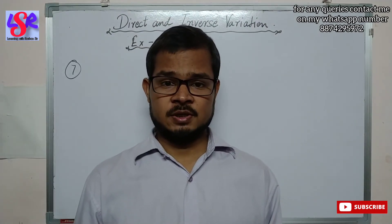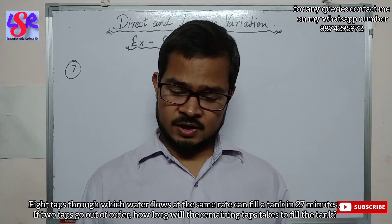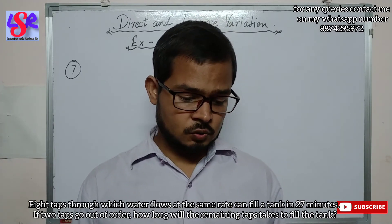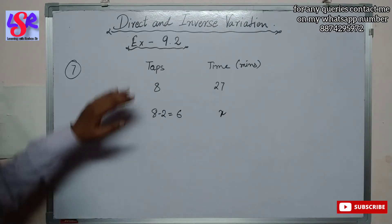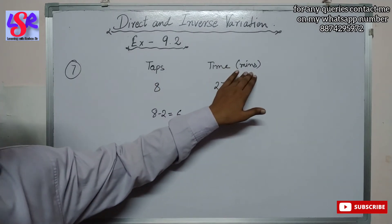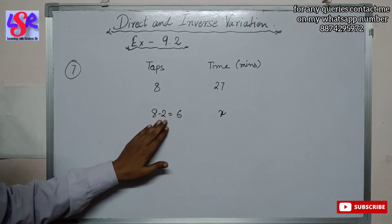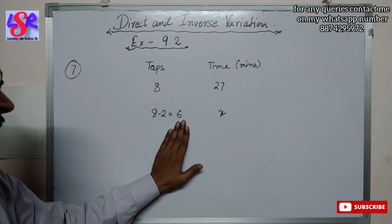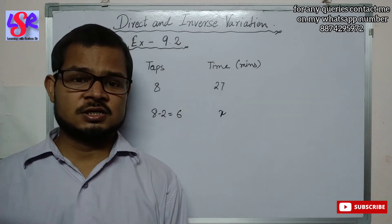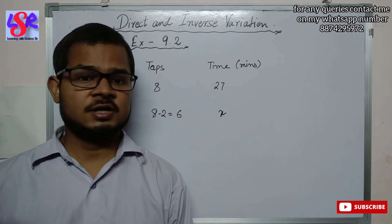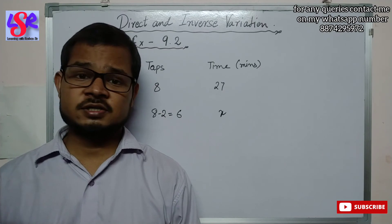Now let's see question number 7. Eight taps through which water flows at the same rate can fill a tank in 27 minutes. If 2 taps go out of order, how long will it take the remaining taps to fill the tank? With 8 taps it takes 27 minutes; now with only 6 taps remaining, we need to find the time. More taps means less time, fewer taps means more time, so it is a case of inverse variation.